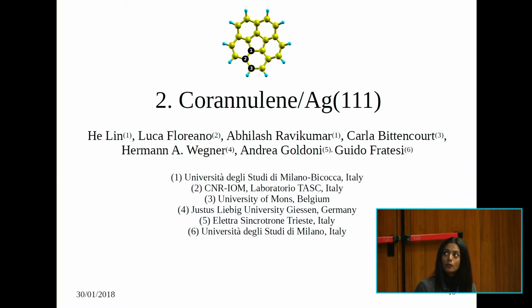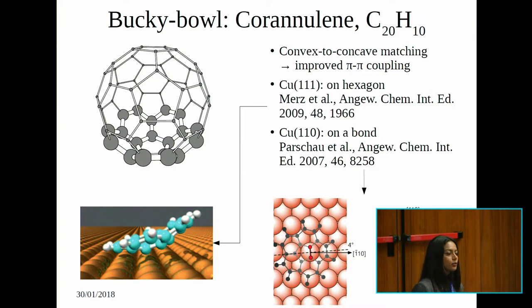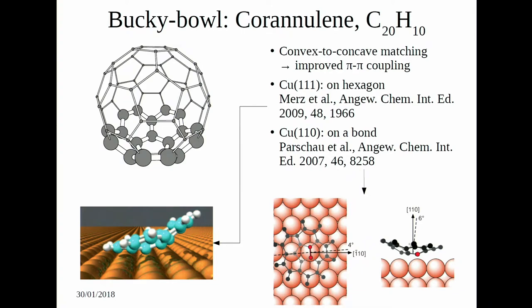Moving on to the second system: corannulene on silver 111. Corannulene is called the buckybowl because it can be obtained from the buckyball C60 by cutting the top 20 carbon atoms. It has a pentagon in the middle surrounded by six hexagons. It is a curved molecule, and usually one corannulene bonds with another in a convex-to-concave coupling to maximize π bonding. On surfaces such as Cu(111) it has been reported to adsorb on one of the hexagons in a tilted manner, and on Cu(110) on one of the carbon-carbon bonds of the central pentagon — always in a tilted way.